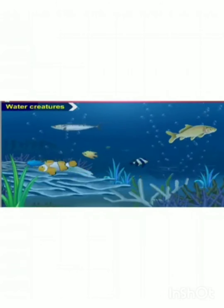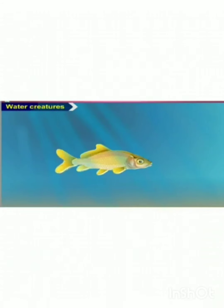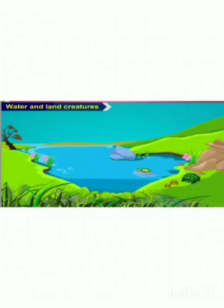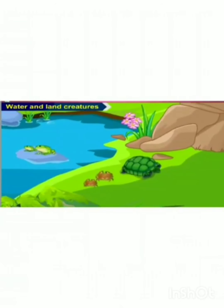Water creatures. The fish lives in water. The fish has scales, fins, gills and a tail. Water and land creatures: some creatures can live both in water and on land. Frogs, tortoise and crabs are some of the creatures which can live in water as well as on land.